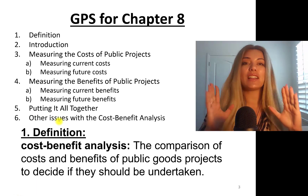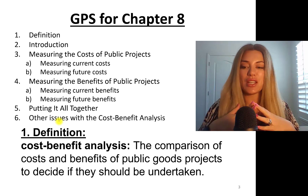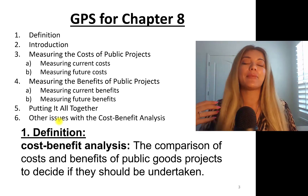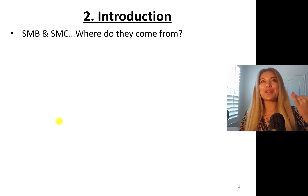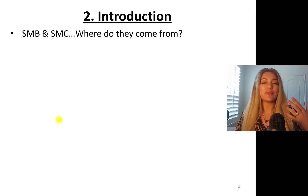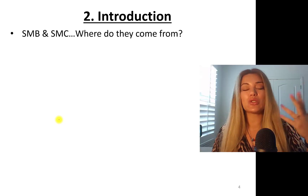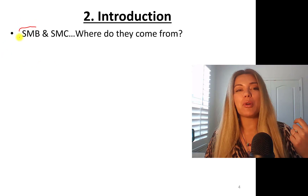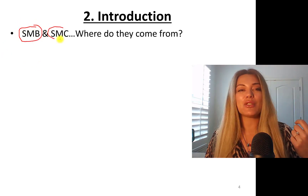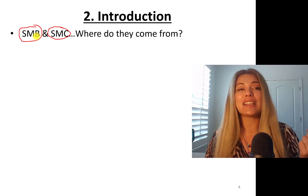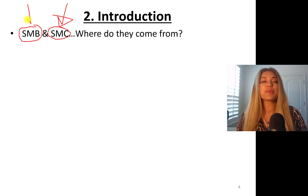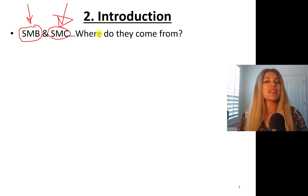Cost benefit analysis is defined as the comparison of costs and benefits of public goods projects to decide if they should be undertaken. We learned about social marginal benefits and social marginal costs in the externalities chapter — that's the benefit to society beyond private marginal benefit, and social marginal costs includes the costs to society beyond private marginal costs. These are very important in externalities, positive or negative, because social marginal cost is not equal to private marginal cost when there is a production-side externality, and social marginal benefit is not equal to private marginal benefit when there is a consumption-side externality.